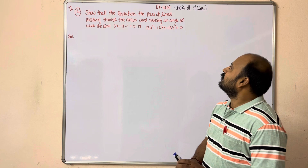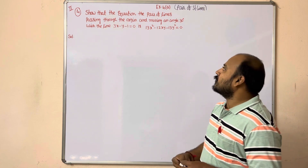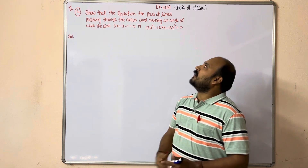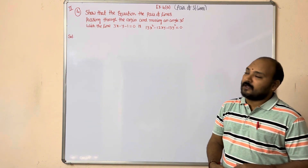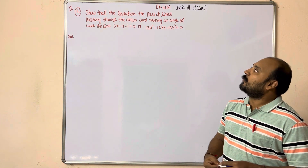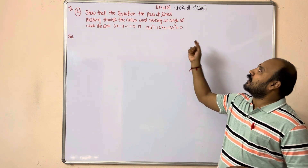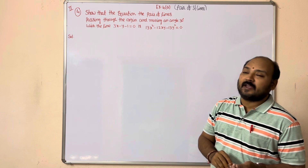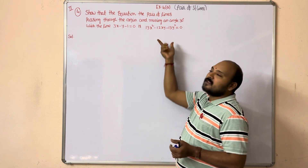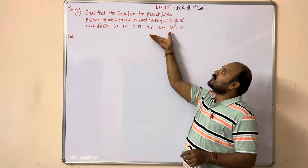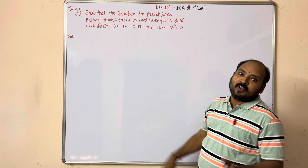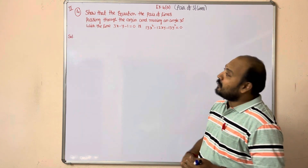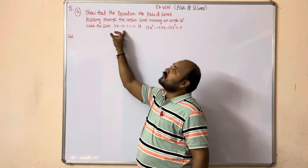This is a question from pair of straight lines - a seven mark question we may expect. Show that the equation of the pair of lines passing through the origin and making an angle of 30 degrees with the line 3x minus y minus 1 equal to 0 is the given equation. One of the lines is passing through the origin and making an angle 30 degrees with this line.